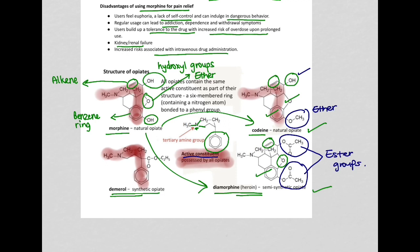If you look at the structure of synthetic opiate, you can also see here you have the benzene ring, but that's the only thing that's common. You don't have any alkene or hydroxyl groups, but what you have here is an ester group. And of course, you have the active constituent.